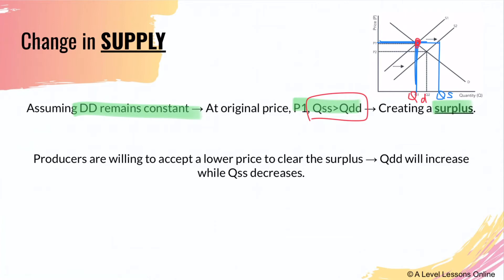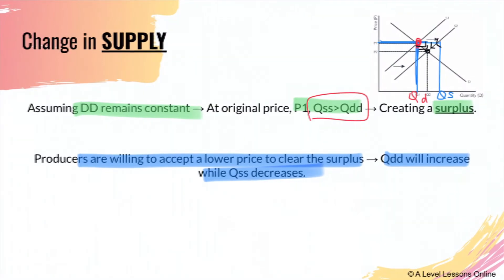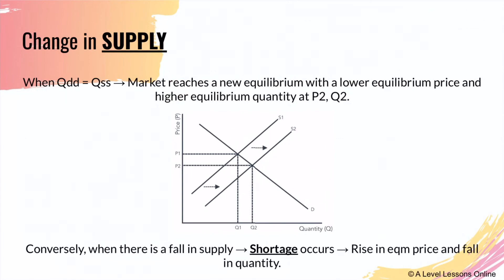Producers are willing to accept a lower price to clear their surplus. Hence quantity demanded will increase while quantity supplied will decrease. They move downwards to intersect at the new equilibrium price P2. When quantity demanded equals quantity supplied, the market reaches a new equilibrium with a lower equilibrium price and higher equilibrium quantity. This is the price mechanism working again.